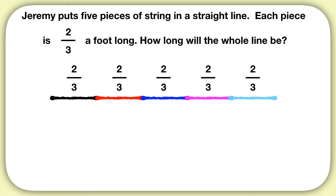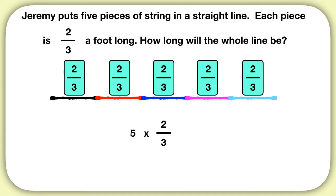In this problem, we notice that we have 5 groups of 2 thirds. When we have this same fraction repeating like this, we can represent this as 5 times 2 thirds.